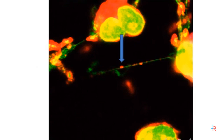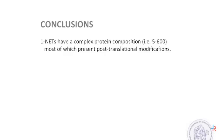Finally, here we show the steric relationship of proteins and DNA in the NET filament. In red is represented alpha-enolase, and in green is represented DNA. It is very clear that there is a contiguous relationship of DNA with alpha-enolase.